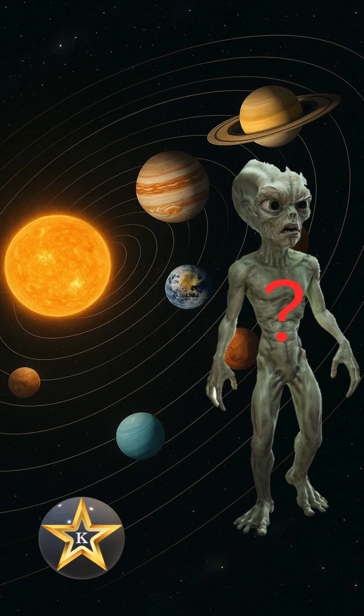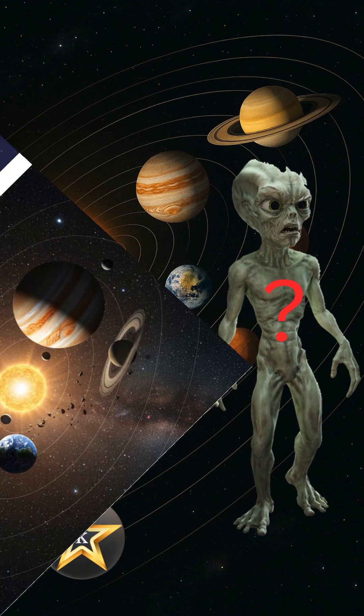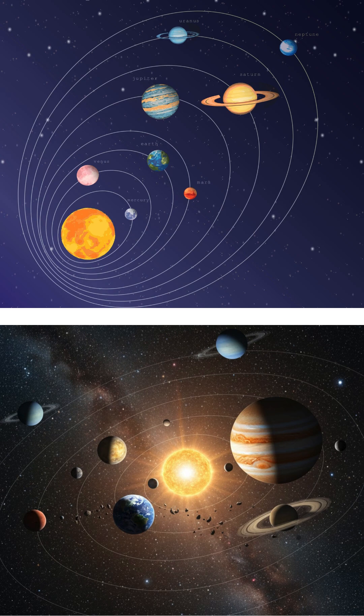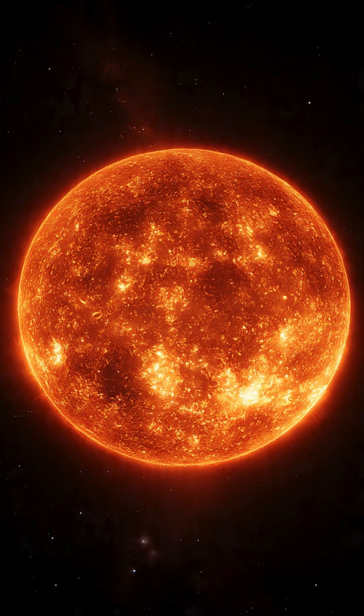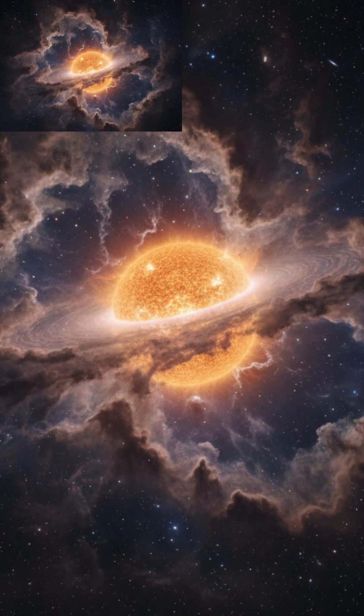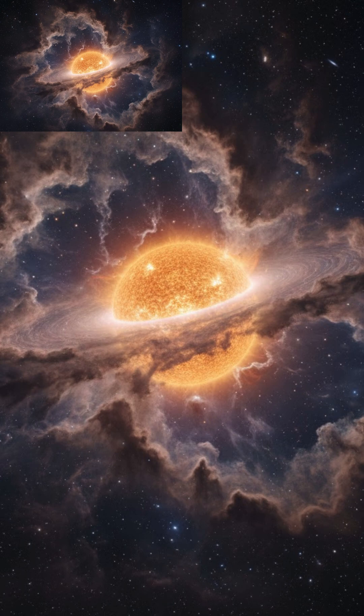Life Beyond Earth: A Journey Through the Solar System. The solar system is a gravitationally bound system dominated by the Sun, a G-type main-sequence star that contains over 99.8% of its total mass. It formed approximately 4.6 billion years ago from the gravitational collapse of a giant interstellar molecular cloud.